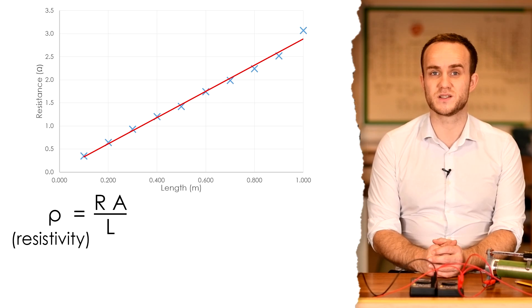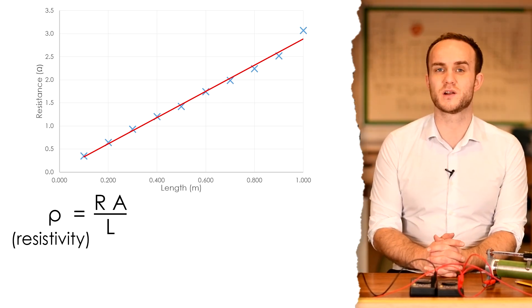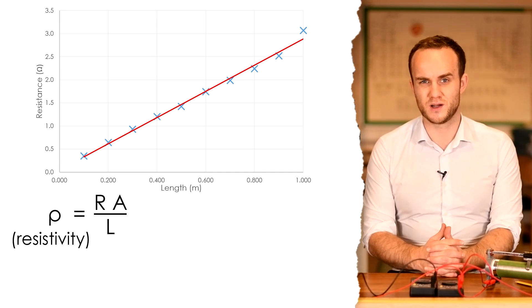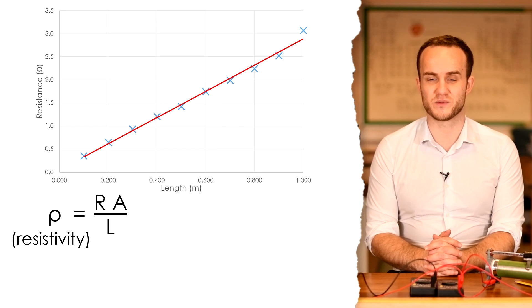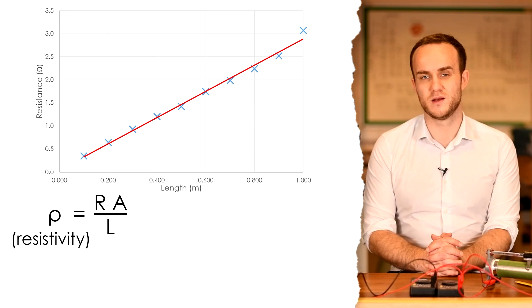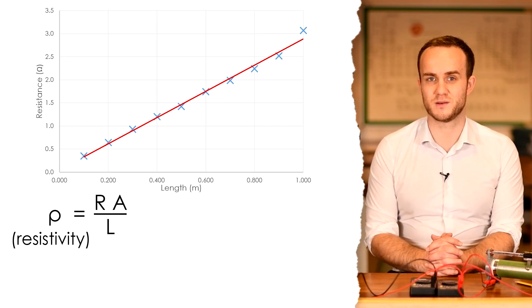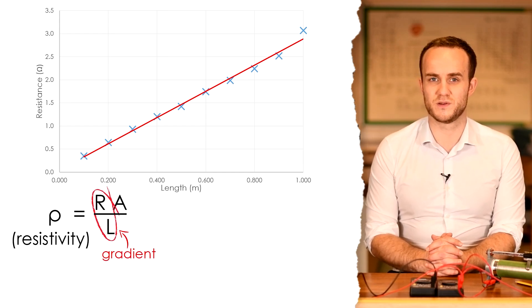Now using this, we can find the resistivity of the wire and check it against the actual value. Now the gradient of my graph is 2.84. I can go to 3 sig figs because both my resistances and lengths are to 3 sig figs. Now the equation for resistivity is rho equals R A over L. Resistance times cross-sectional area divided by length. Now R over L is equal to the gradient of our graph.